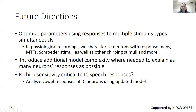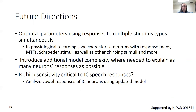As for future directions, ultimately we want to fit the model to multiple simultaneous stimulus types, including Schroeder chirps, response maps, modulation transfer functions, and additional stimuli presented in physiology. To do that, we will likely need to introduce additional complexities or stages to the model and continue exploring the parameter space. Finally, we really want to ask: is chirp sensitivity critical to IC speech responses? This will involve assessing the ability of our chirp model to replicate IC neuron vowel responses and comparing these results to a model without chirp sensitivity. Thank you for your time, and I'd be happy to take any questions.